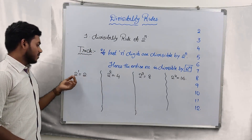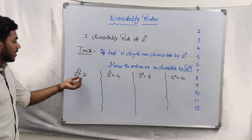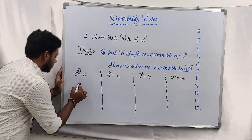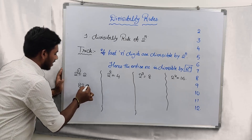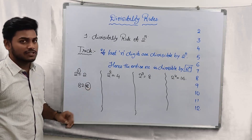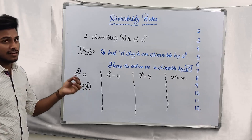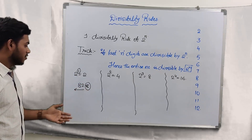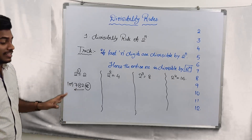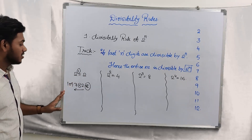2 can be written as 2 power of 1, so n value is 1. If the last digit is divisible by 2, hence the entire number is divisible by 2. For example, if you look at this number ending in 8, the last digit is 8, and 8 is divisible by 2, hence the entire number is divisible by 2. There is no importance for the remaining digits other than the last one digit.